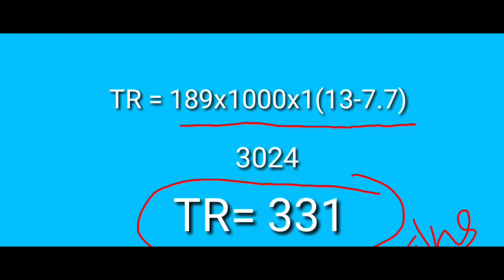For the centrifugal chiller, TR is equal to 189 into 1000 into 1 into (14.6 minus 9.0), divided by 3024. Our total TR value is equal to 331 TR. Next, on the VAM chiller.